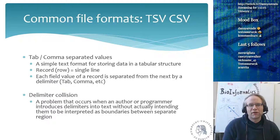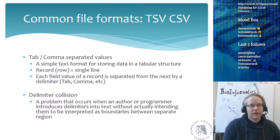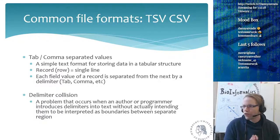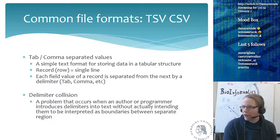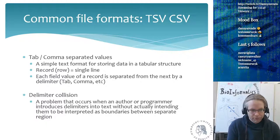The most common file format in bioinformatics is the TSV or CSV file. TSV stands for tab-separated values, and CSV stands for comma-separated values. Both are simple text files storing data in a tabular structure: every line is a row, and columns are defined by a separator — a tab for TSV, a comma for CSV.